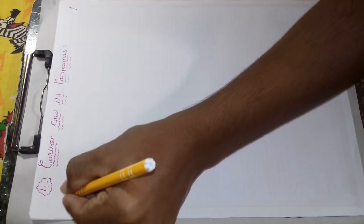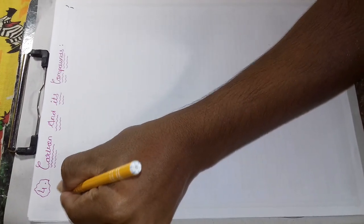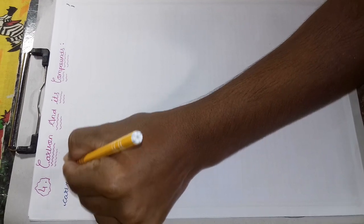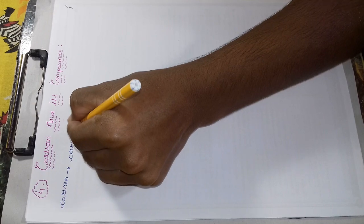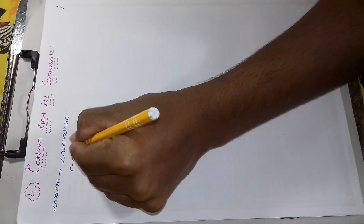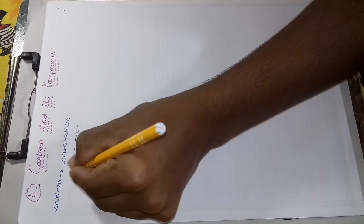Friends, Carbon has a unique property of Catenation. Catenation means linking with each other, each other carbon atoms. It can form a very long chain with each other.